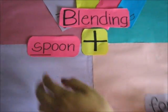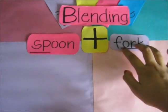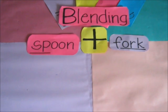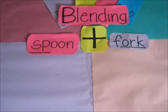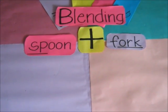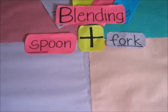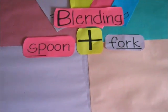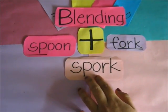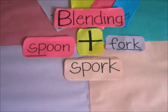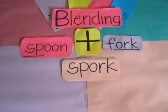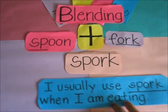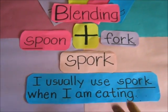Let's have an example of blending. Here we have two words: 'spoon' plus 'pork.' On the first word we will only get its first two letters, while on the second word we will only get its last three letters, so that we can form the new word 'spork.' Let's use 'spork' in a sentence. For example: 'I usually use a spork when I am eating.'